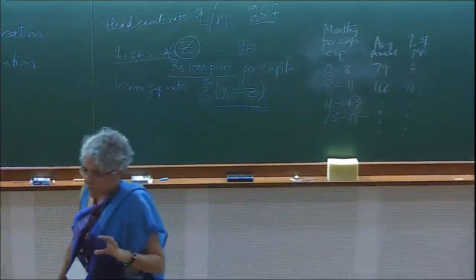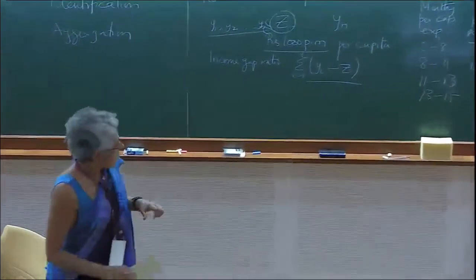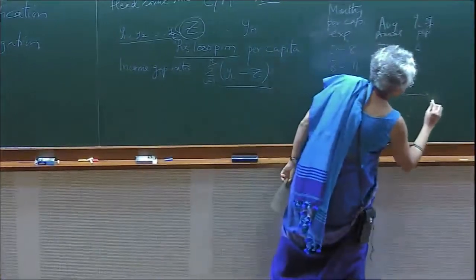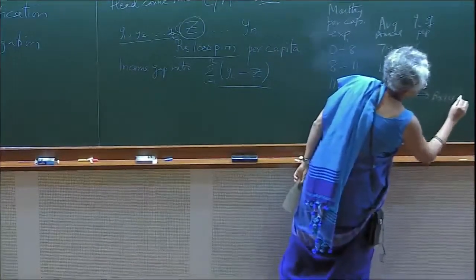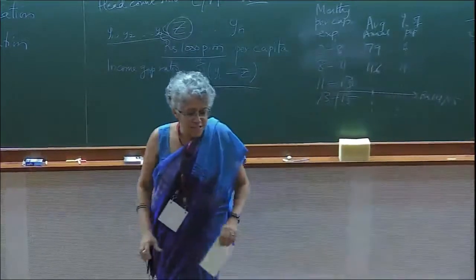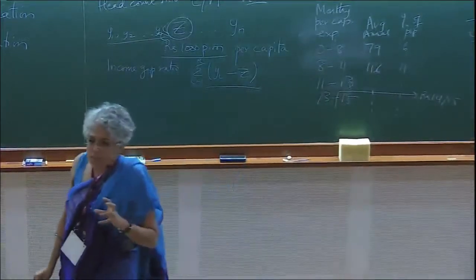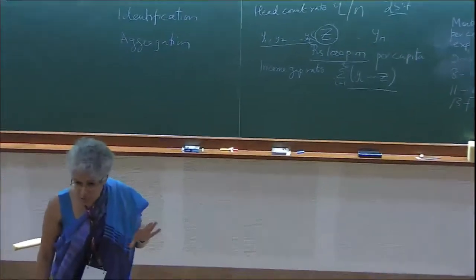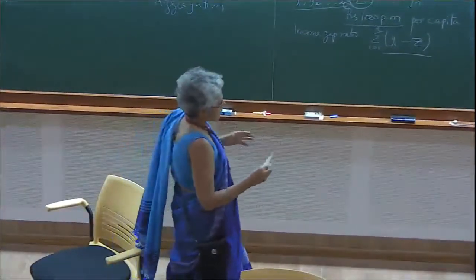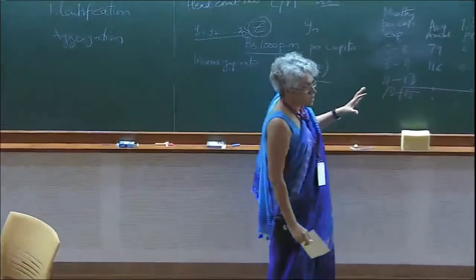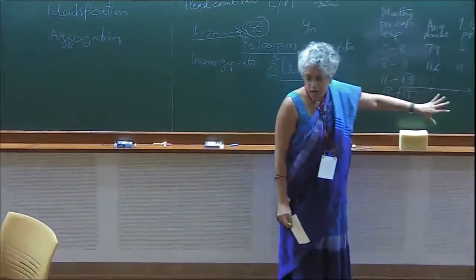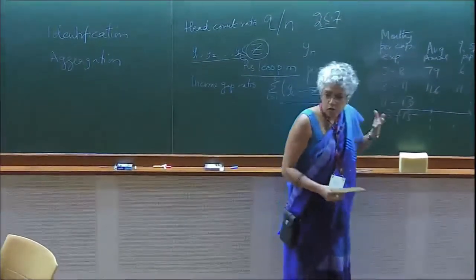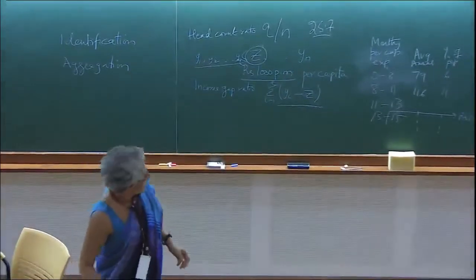In 1961, zero to eight rupees was the first expenditure category. The average annual expenditure of that group was about 79 rupees, and we know what percent of the population is in each group — 6%, 11%, and so on. The first poverty line was set at rupees 14 to 15 per month. If you understand this logic, you can take today's numbers and apply it to any particular year.